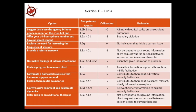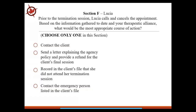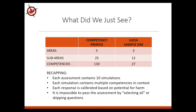Every single option throughout every single section of every single simulation has this factored into it. Section F is the last part of Lucia — about termination sessions. She calls and cancels, and based on the information gathered to date and your therapeutic alliance, you must identify the most important and appropriate action. You can't take it back, so make sure it's the most critical one. As a recap: each assessment contains 10 simulations, each simulation contains multiple competencies in context, each is calibrated based on potential for harm, and it's impossible to pass the assessment by selecting all options or by skipping questions.